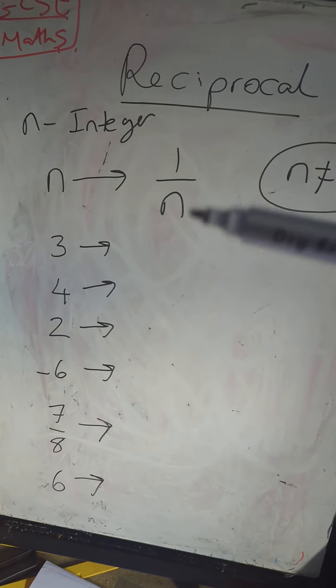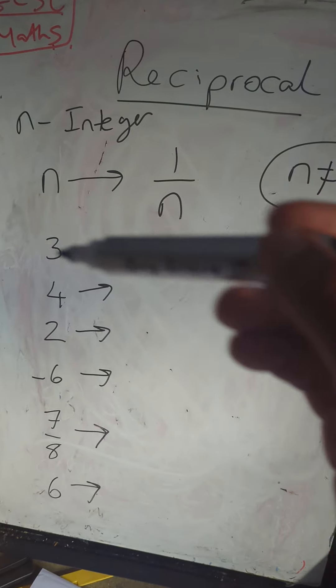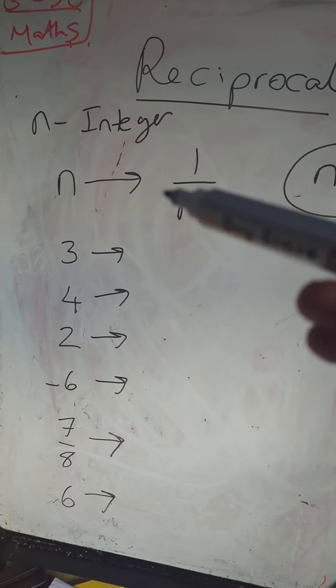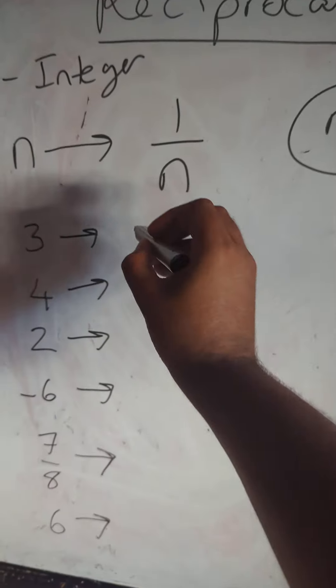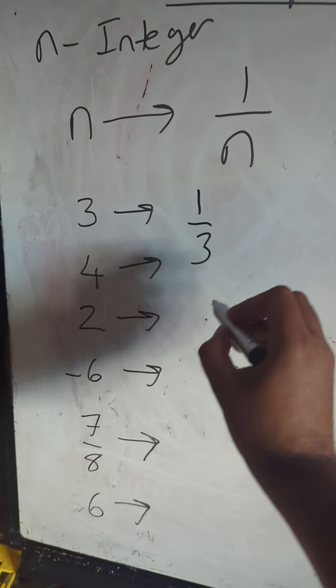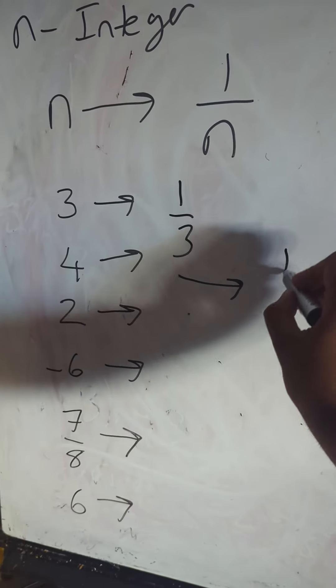Following this pattern, the number 3, the reciprocal will be 1/3. The reciprocal of 4 would obviously be 1/4.